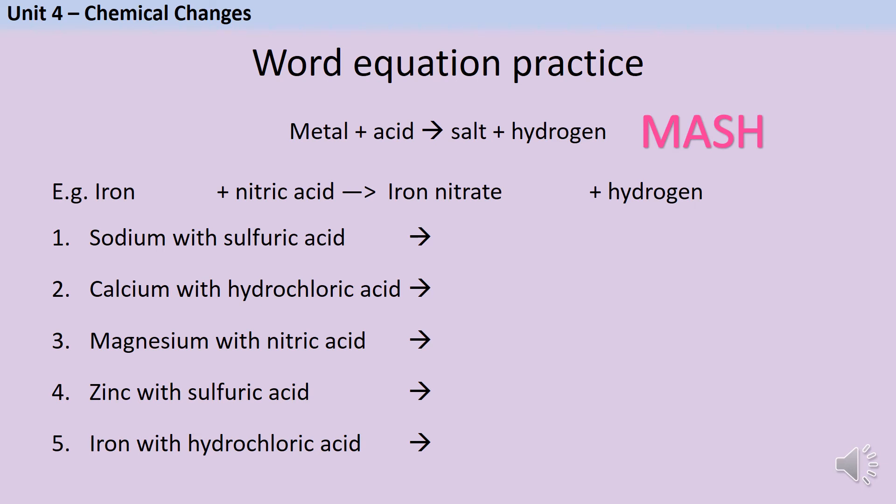For instance, when iron reacts with nitric acid, it makes iron nitrate, that's the salt that we practiced naming in the last slide, and hydrogen.